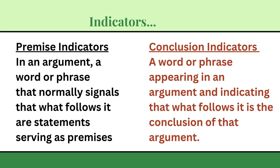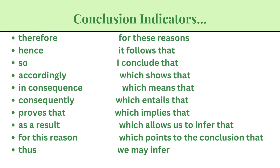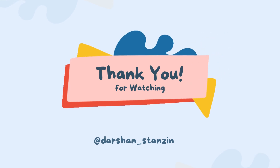Let's see the premise indicators: since, because, for, follows from, inasmuch as, as indicated by — these are all premise indicators to keep in mind. If 'since' precedes a statement, that statement is your premise. For conclusion indicators we have: therefore, hence, accordingly, in consequence. As we saw in the previous examples, these conclusion indicators were used to signal the conclusion.